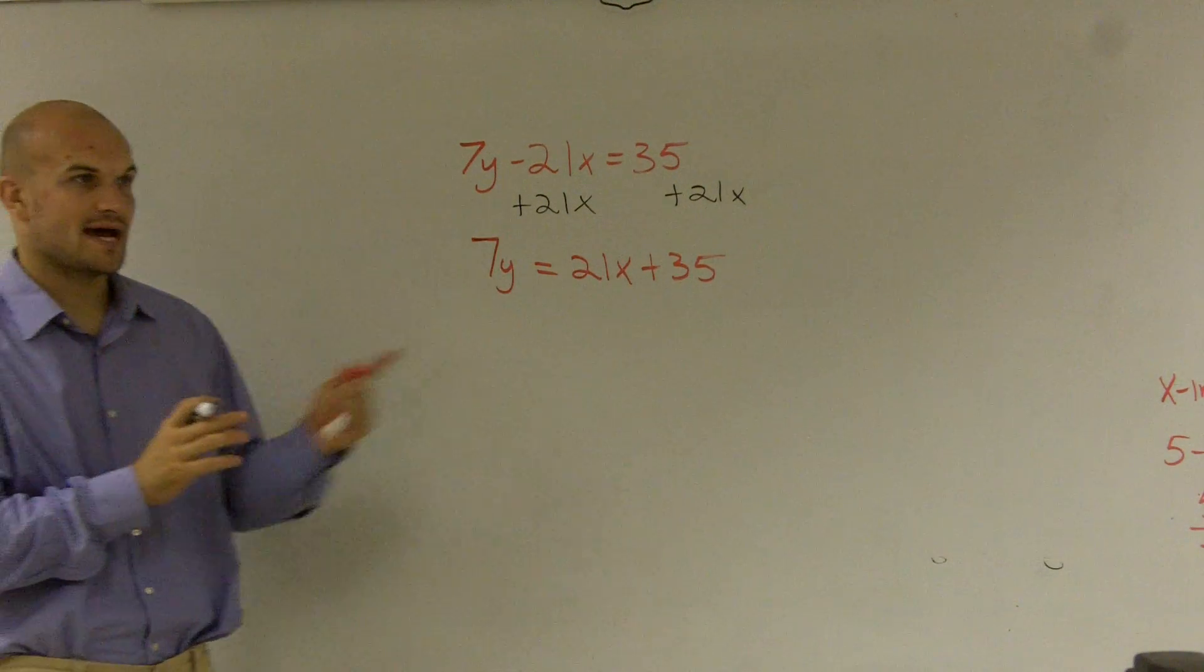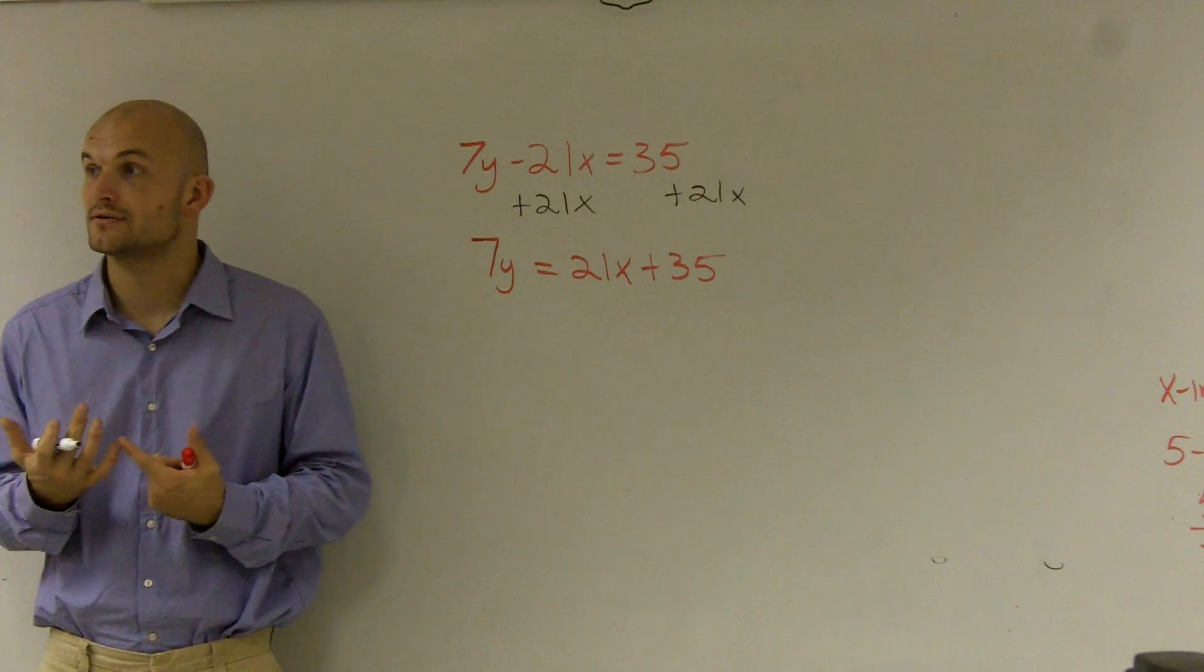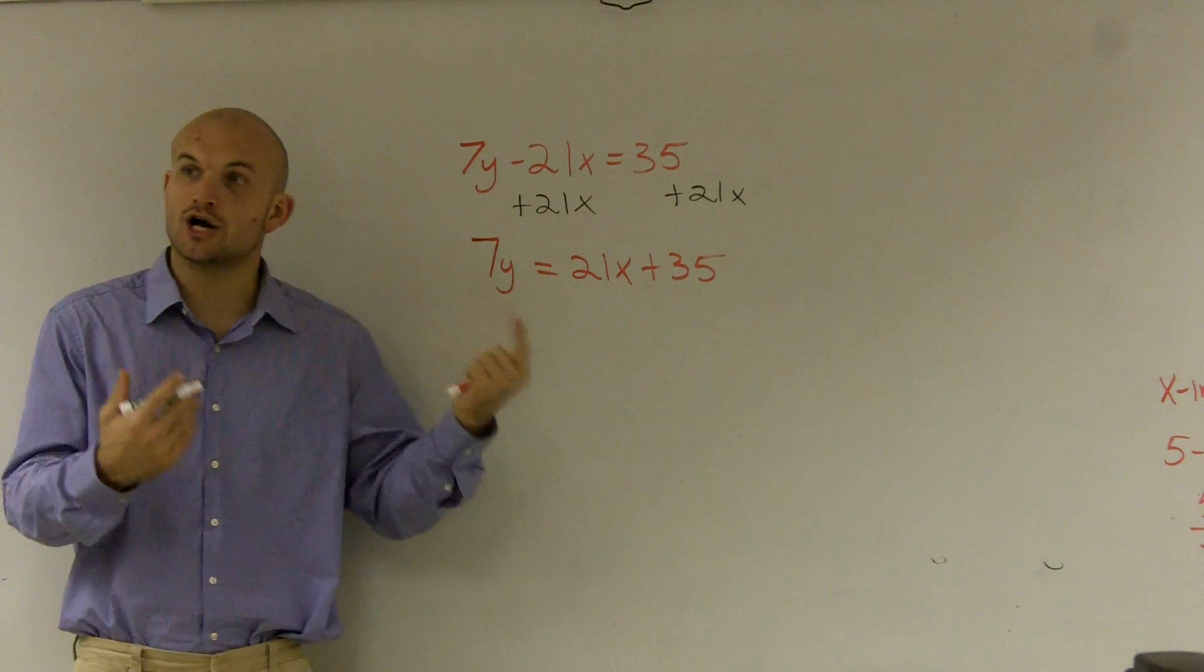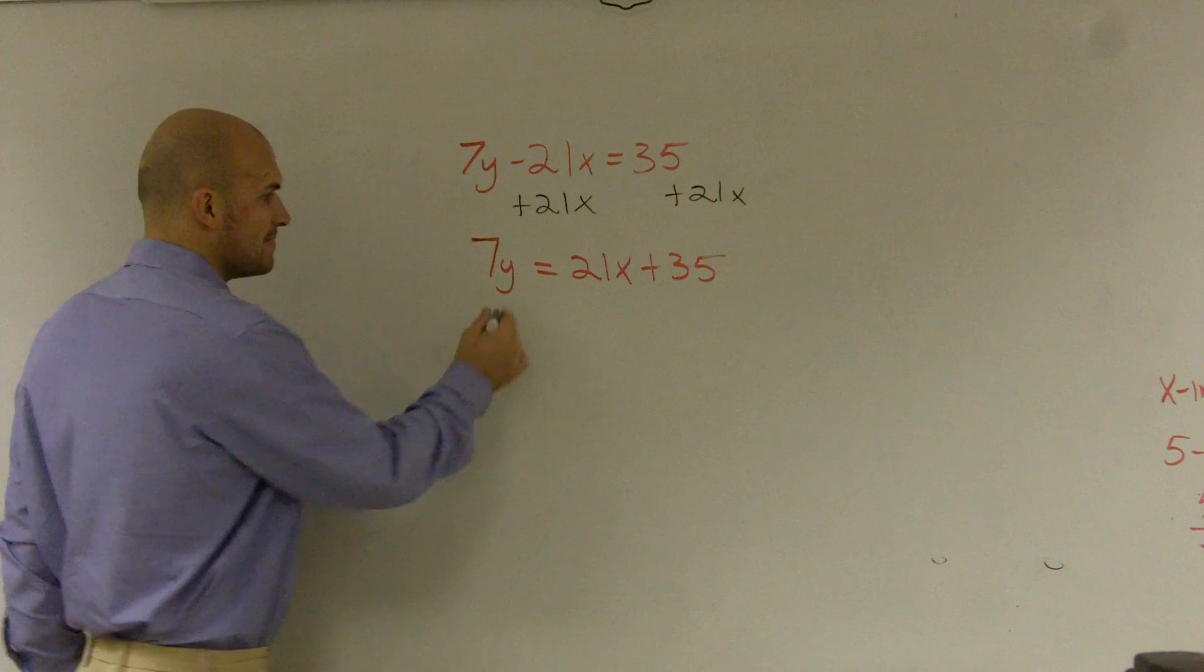So the last thing is I have the 7. I need to get rid of the 7 multiplied by my y. Remember, to undo multiplication, you need to divide by 7.